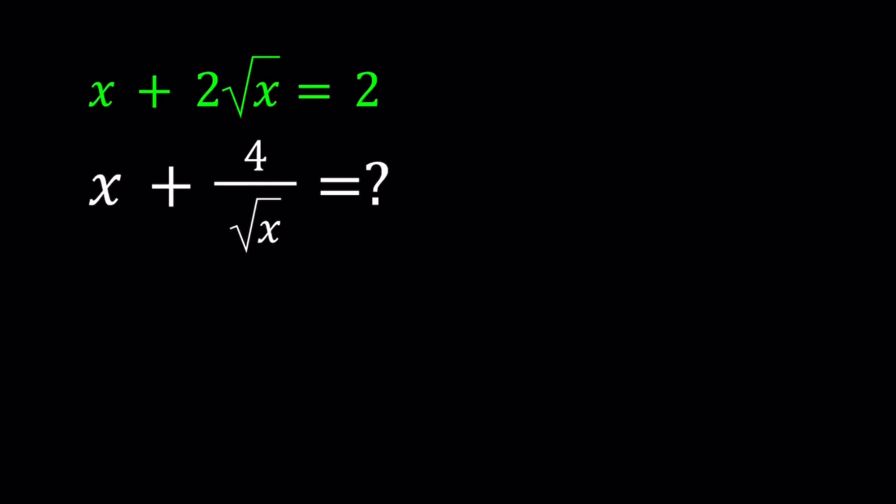Hello everyone. In this video, we're going to be evaluating a radical expression. We are given that x plus 2 times the square root of x is equal to 2, and we're supposed to evaluate x plus 4 over square root of x. I'll be presenting two methods, and we'll talk about a couple interesting things. And at the end, I'm going to show you a graph. So let's go ahead and start with the first method.